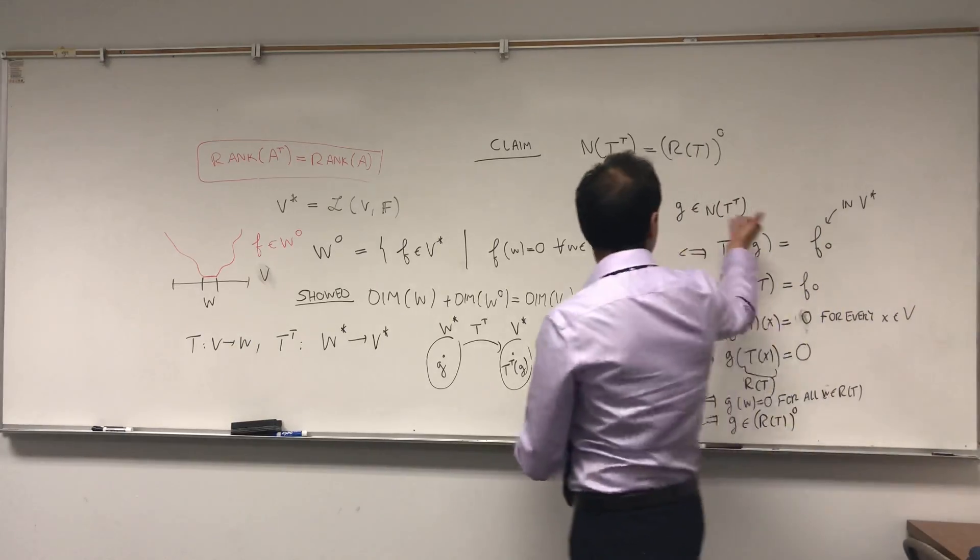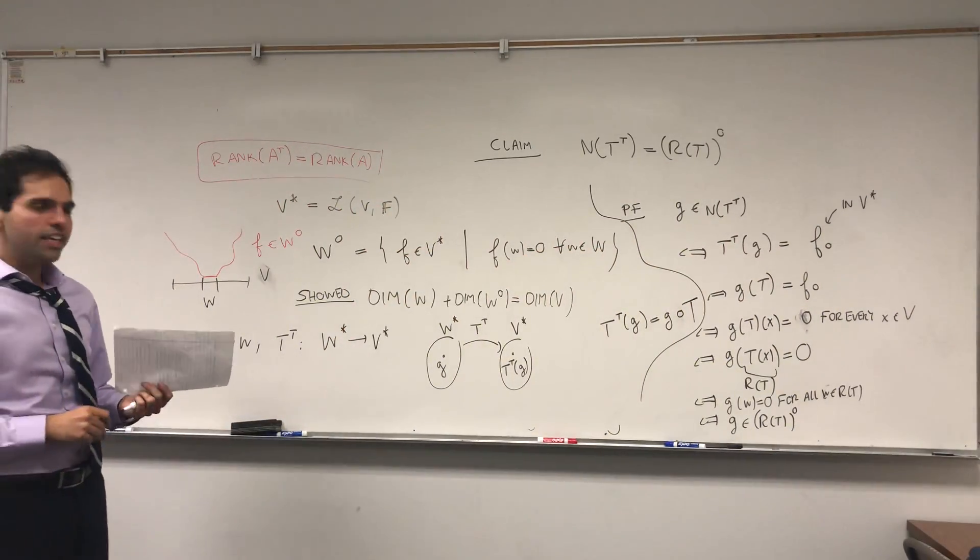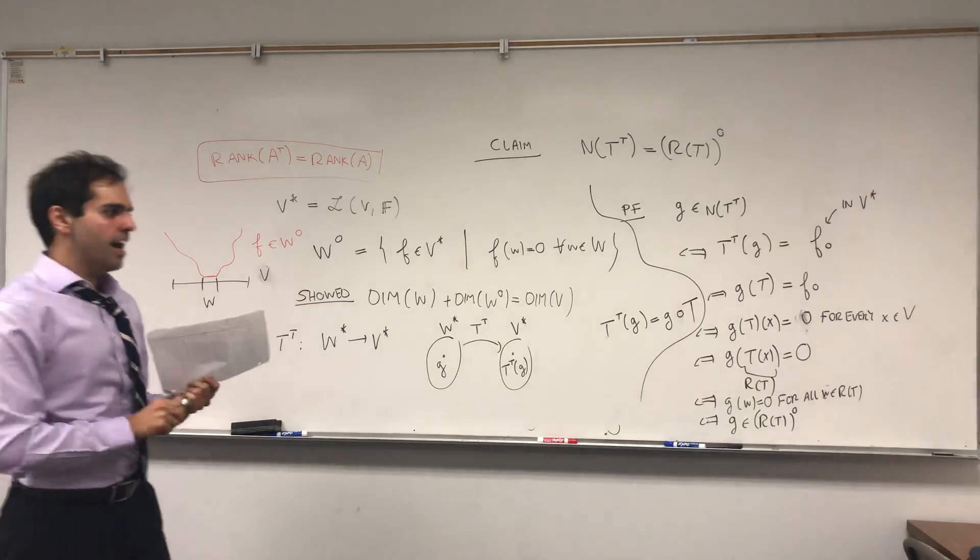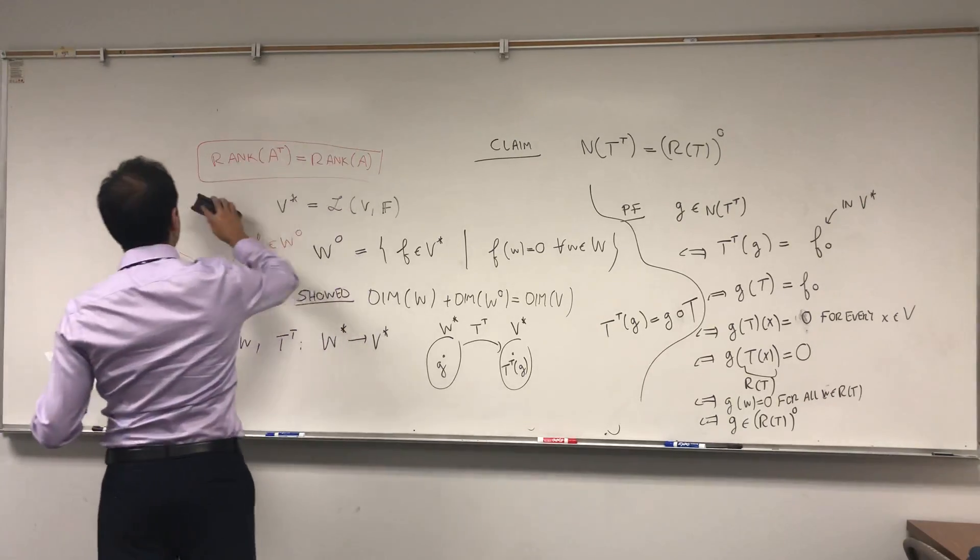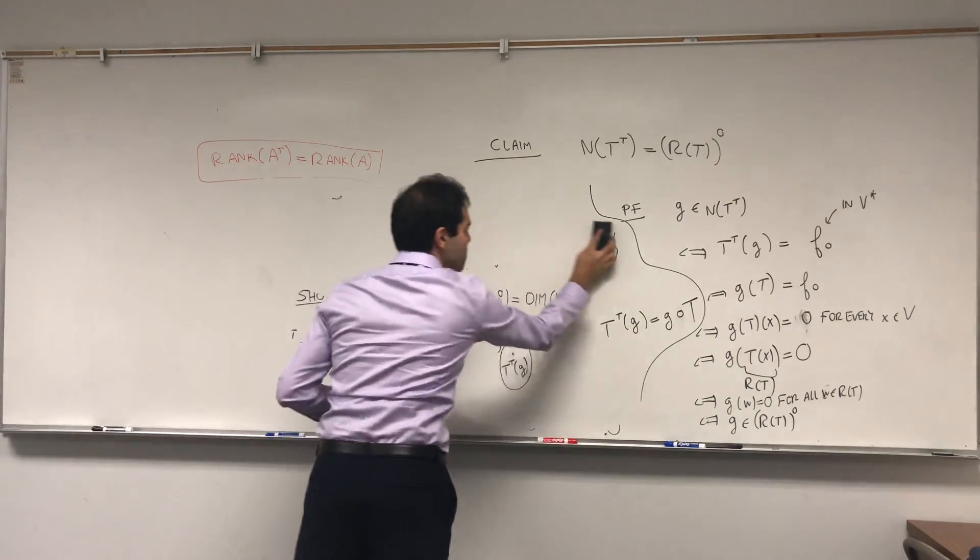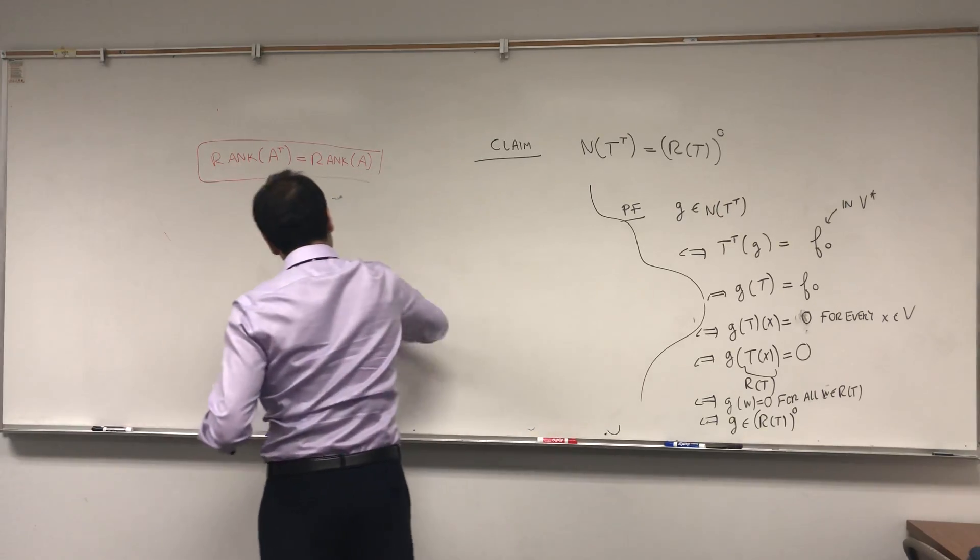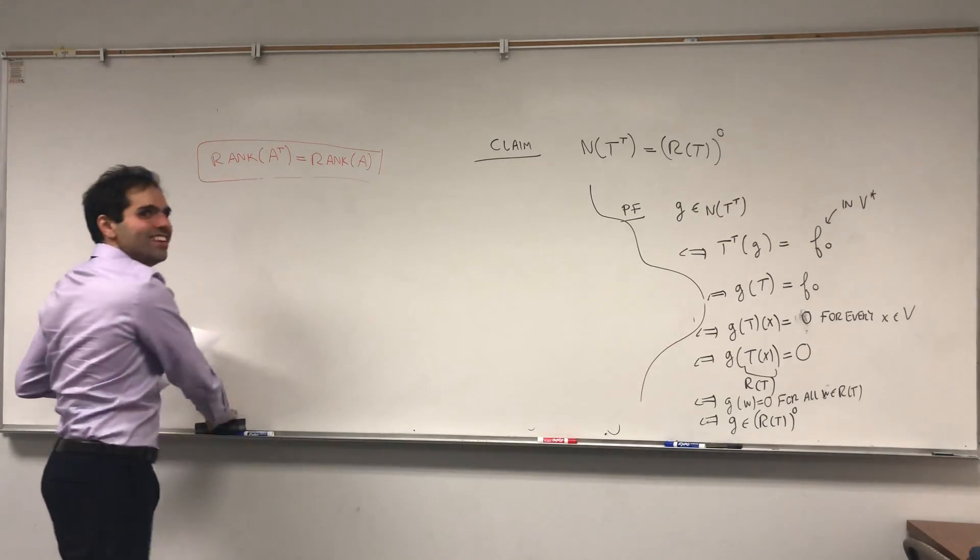And therefore, because we have this equivalence, the null space of T transpose equals to the annihilator of the range. And using this, we can now show our beautiful identity. Ah, what a nice thing to do, linear algebra.